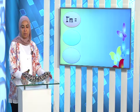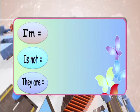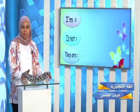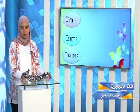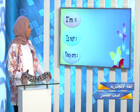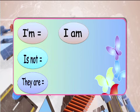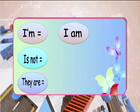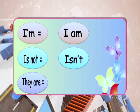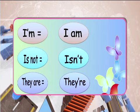We'll go for a small exercise before we cover all these. These are long and short forms. You are going to write the long form if it's a short form, and the short form if it's a long form. The short form 'I'm' — the long form is 'I am.' 'Is not' is the long form — the short form is 'isn't.' 'They are' is the long form — the short form is 'they're.'